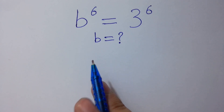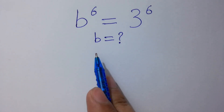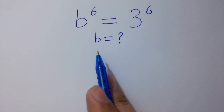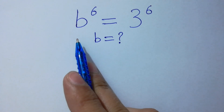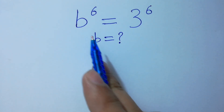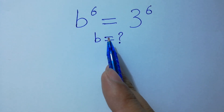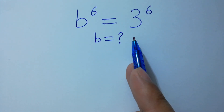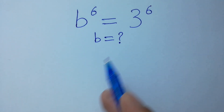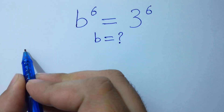Hello friends, find the value of B if B to the power 6 equals 3 to the power 6. Let's have a solution.